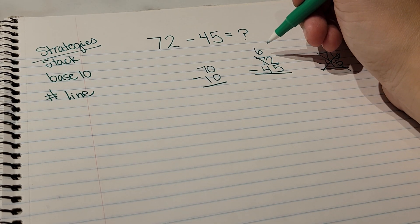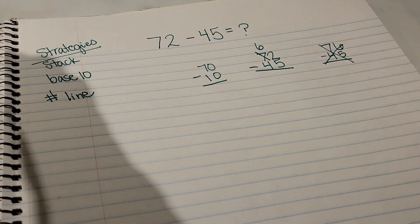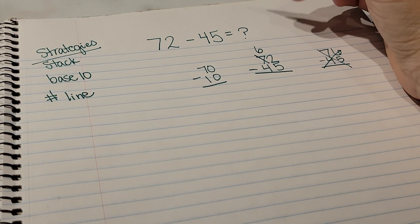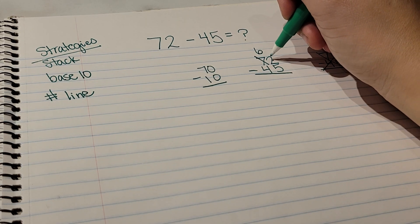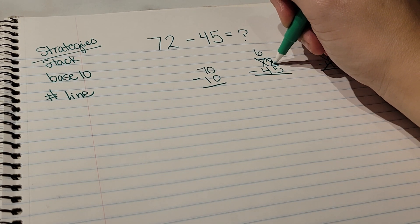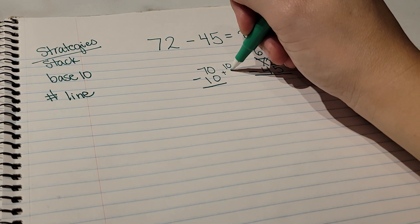So 70 minus 10 is 60, and we represent that with one digit in the tens place, which is a 6. And then I teach them that the 10 is floating in the air. We have to grab it - we always clap above our head, grab it, and then add it to your ones place.